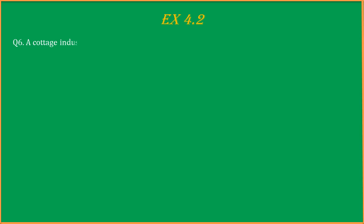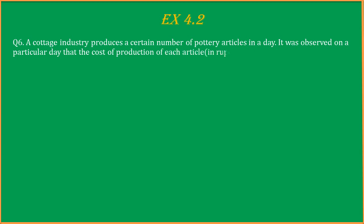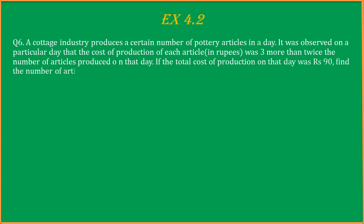Now the question is: A cottage industry produces a certain number of pottery articles in a day. It was observed on a particular day that the cost of production of each article in rupees was 3 more than twice the number of articles produced on that day. If the total cost of production on that day was rupees 90, find the number of articles produced and the cost of each article.